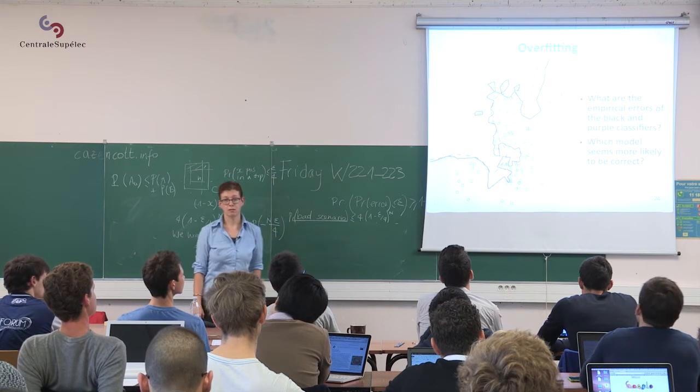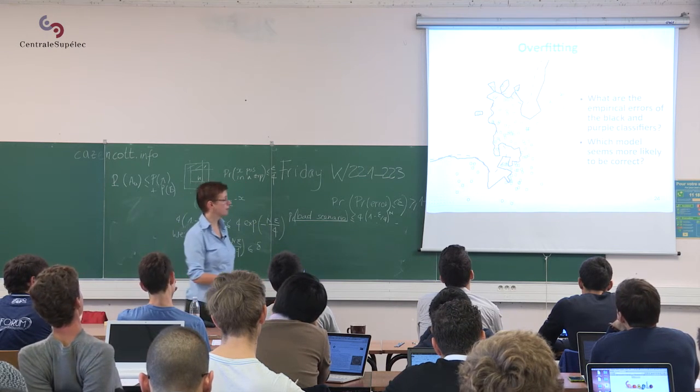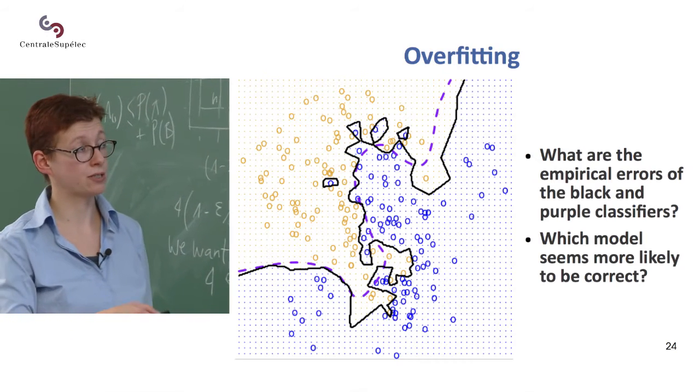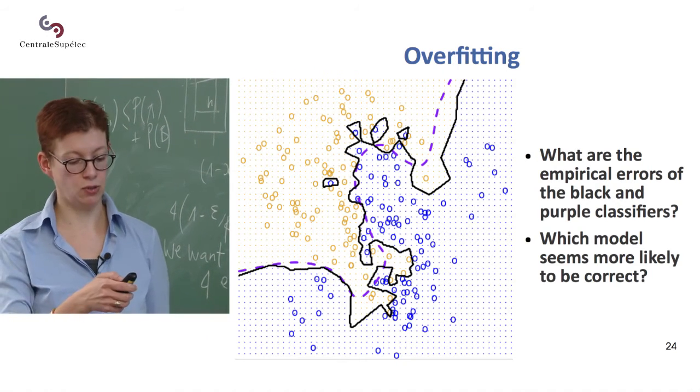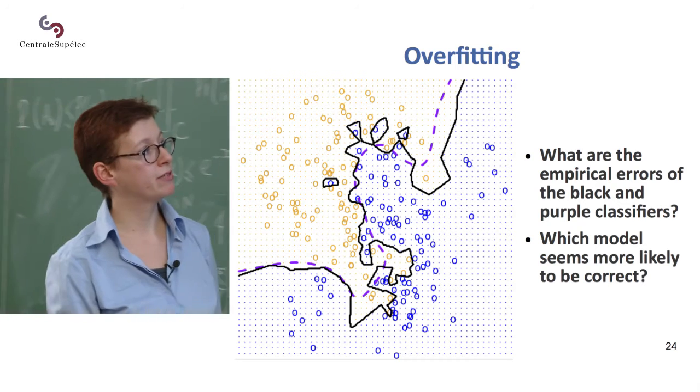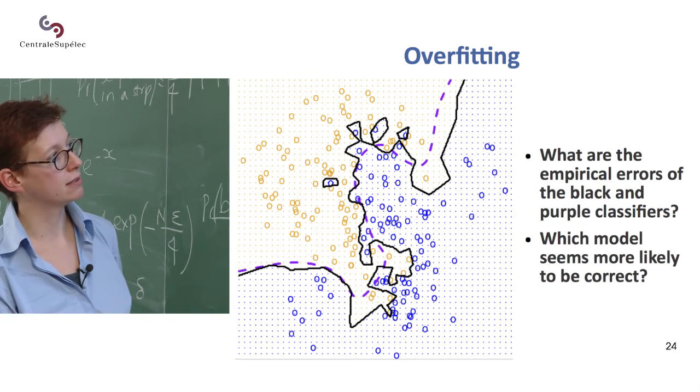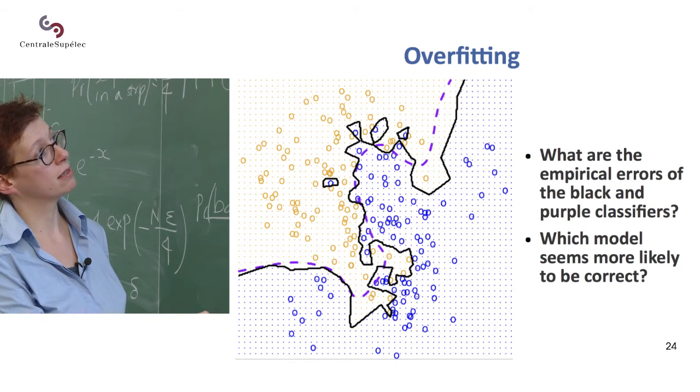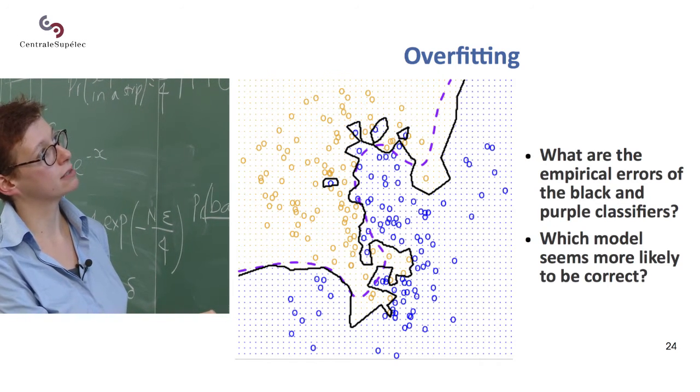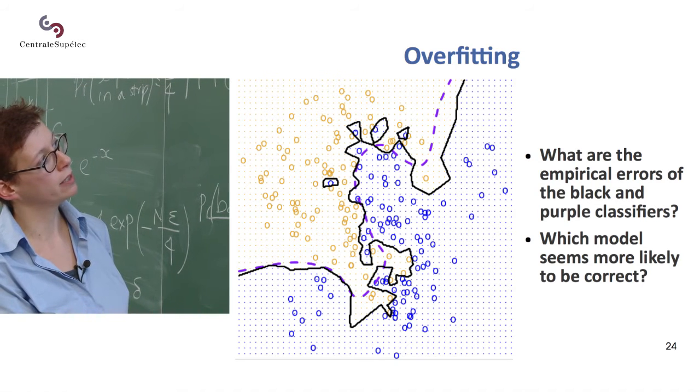So this is linked to something that we call overfitting. This is actually in your textbook. And so, maybe you don't see very well, but you have here a black classifier, which is this complex shape, and you have a purple classifier, which is this dotted line, which is much smoother here.